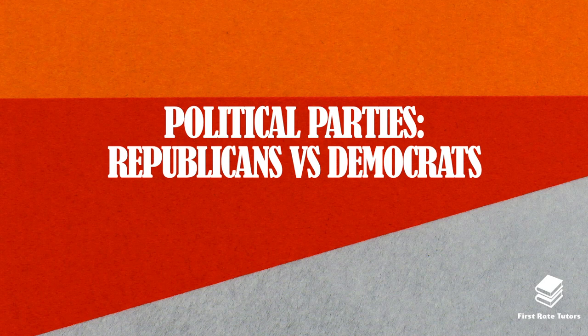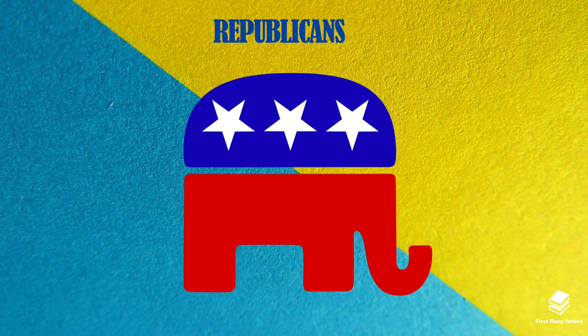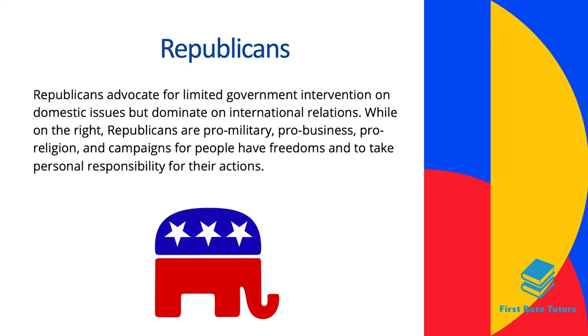When it comes to understanding the political landscape of the US, make sure you understand the difference between the Republican Party and the Democrat Party. Let's start with the Republicans — this is essentially the logo. Republicans advocate for limited government intervention on domestic issues but dominate when it comes to international relations. On the right, Republicans are pro-military, pro-business, pro-religion, and they campaign for people to have freedoms and to take personal responsibility for their actions.